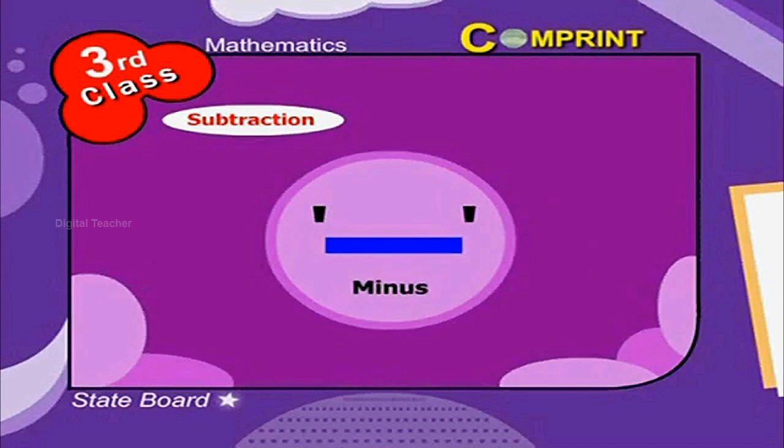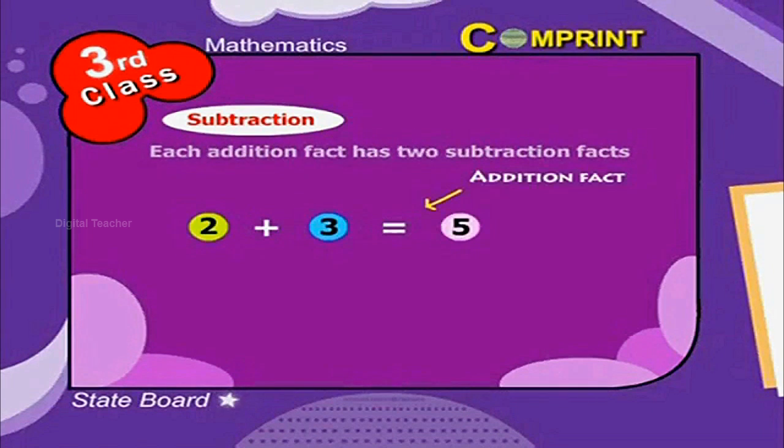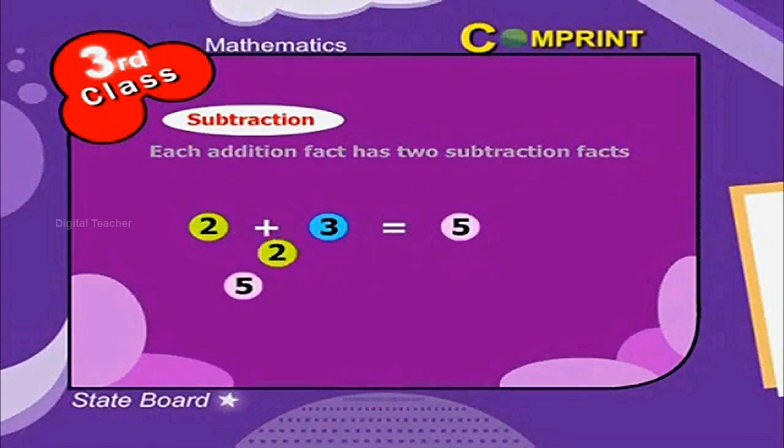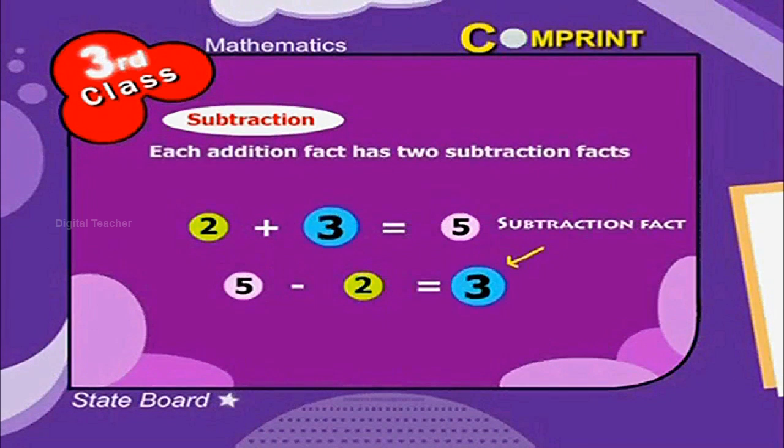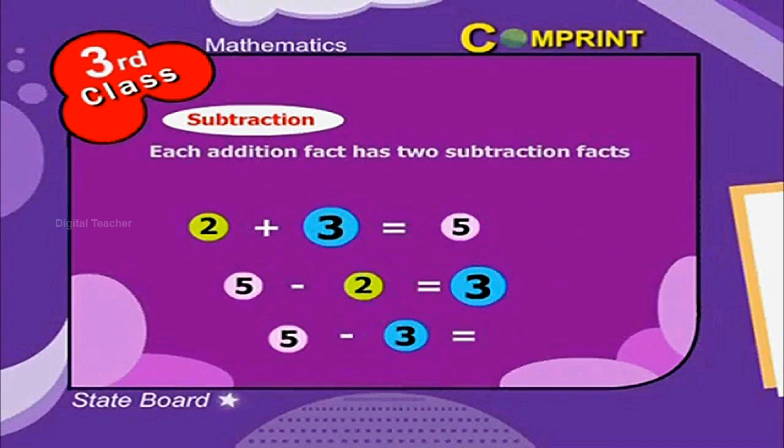Each addition fact has 2 subtraction facts. Here is an example. 2 plus 3 is equal to 5. 5 minus 2 is equal to 3, and 5 minus 3 is equal to 2.